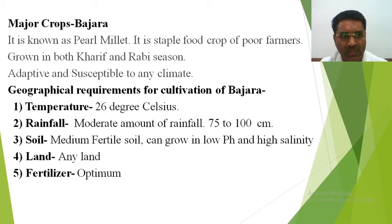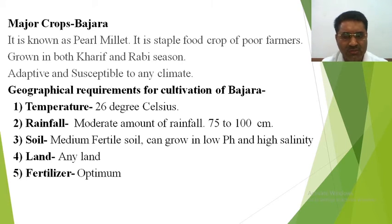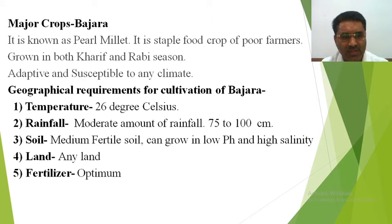Bajra is adaptive and resistant enough to survive in any climate. The geographical requirements for its cultivation are: a temperature of 26 degrees Celsius, which is commonly available throughout Maharashtra — that is why bajra is the main crop there. A moderate amount of rainfall of 75 to 100 centimeters is required, though it can manage outside this range. Medium fertile soil is required; it can also grow in low pH and high salinity soils.